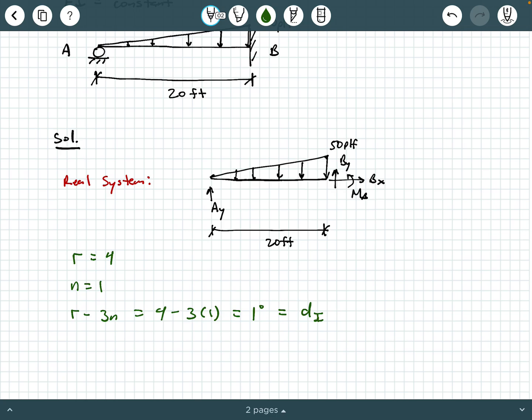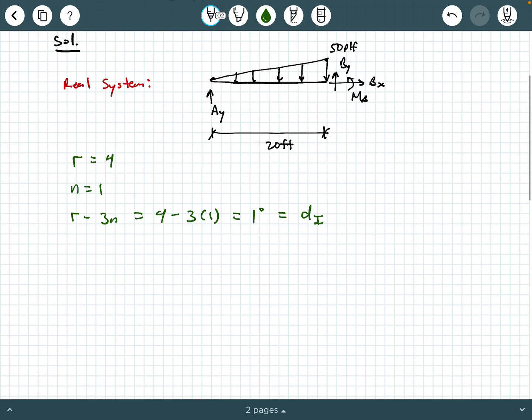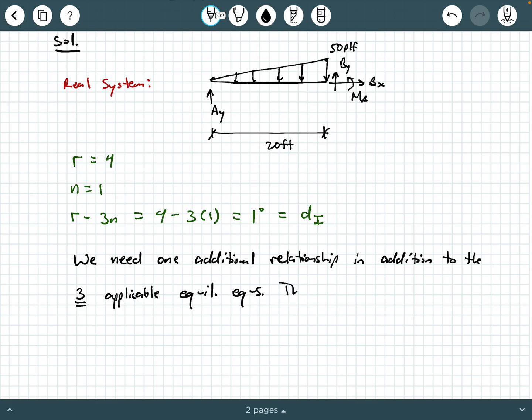If you're a little rusty on determining degrees of indeterminacy, you can check out one of my other videos where I talk a lot more about that with some examples of that. So when you have something that's statically indeterminate to the first degree, what does that mean? Well, that means that we need one additional relationship in addition to the three applicable equilibrium equations. That relationship is what's called the compatibility equation.